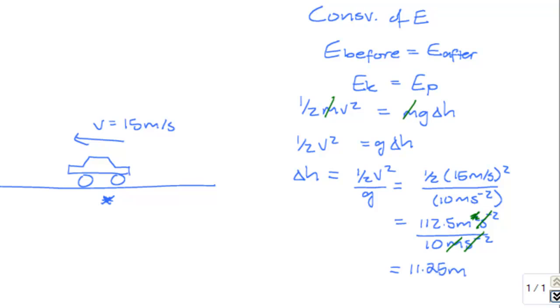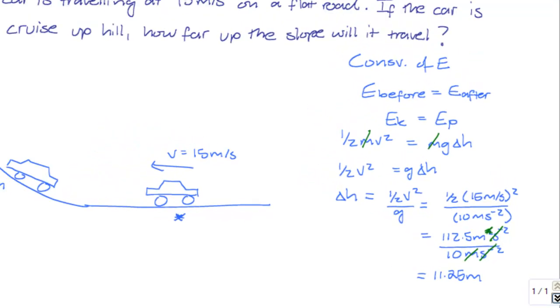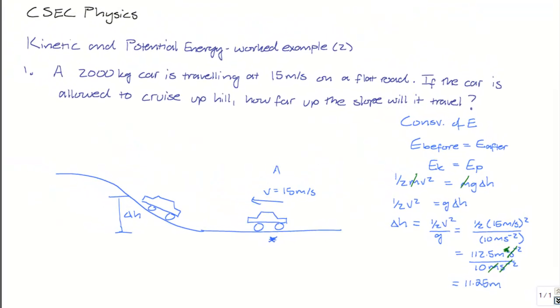So in other words, based on the kinetic energy that the car has at point A, it will be able to travel a distance of 11.25 meters uphill at point B.